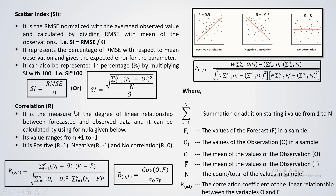Coming to the last parameter — correlation. It is a measure of the linear relationship between two data sets, such as observed and forecasted data. If you want to find what kind of linear relationship exists between those two data sets, you use correlation. The formula is given in three equivalent forms in terms of covariance and variance of the observation and forecast — any one of the formulas can be used and the results remain the same.